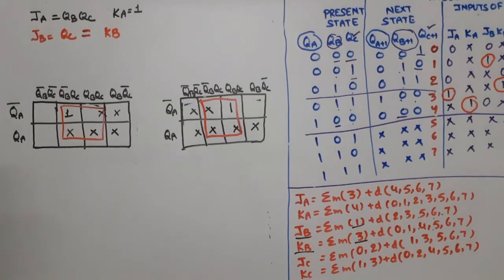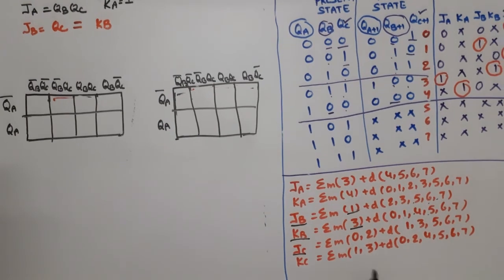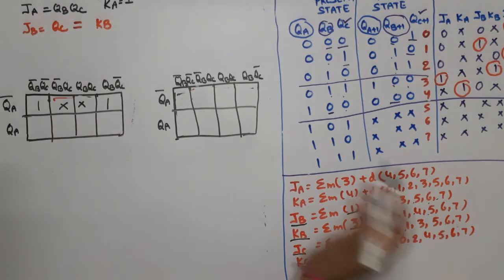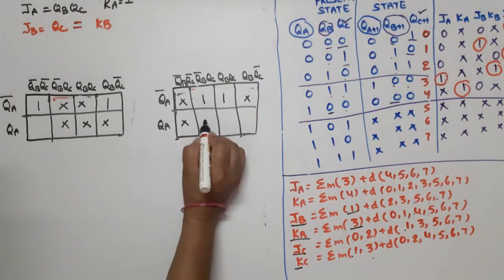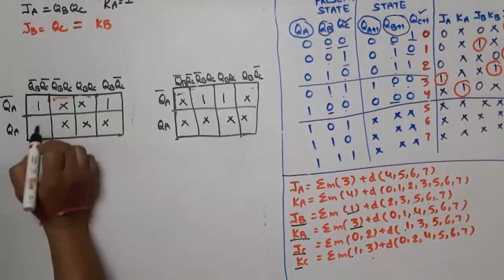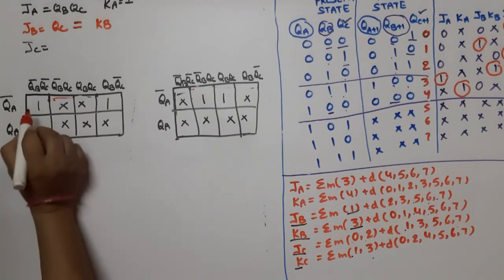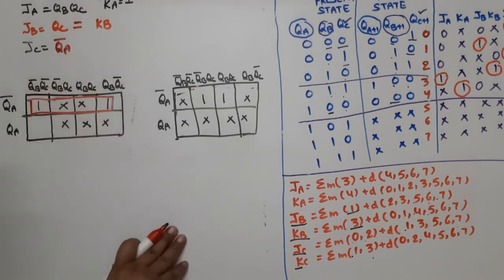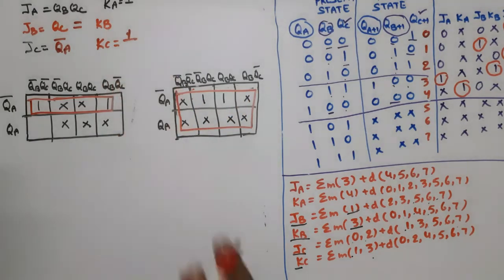For JC, the minterms are at 0 and 2 with don't cares at 1, 3, 5, 6, 7. When simplified into a quad, the equation becomes JC = QA̅ (QA bar). For KC, the minterms are at 1 and 3 with don't cares at 0, 2, 4, 5, 6, 7. These form an octet, so KC = 1. We now have all six input equations.